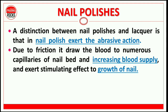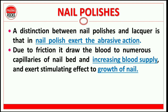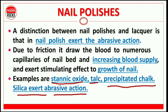So nail polish provides abrasive action, increasing blood supply and stimulating the effect of growth of nail. This is also one benefit of nail polish — it increases blood supply and increases the growth of nail. Examples of ingredients that exert abrasive action are stannic oxide, talc, precipitated chalk, silica, etc. So the main action of nail polish is abrasive action.